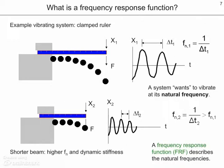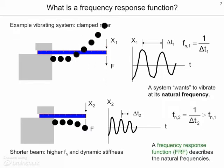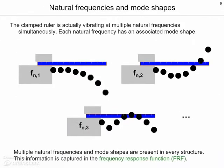Let's talk more about frequency response functions. In the top figure, we see a ruler which is clamped on the edge of a table. If we deflect it and release it, we see that it vibrates at some particular frequency. For the lower ruler, if we deflect it and release it, it vibrates at its own frequency again, but this time at a higher frequency. A frequency response function describes these natural frequencies and the stiffness of the beam. In reality, our ruler is vibrating at multiple natural frequencies simultaneously, and each one of these natural frequencies has a particular shape associated with it, or mode shape.